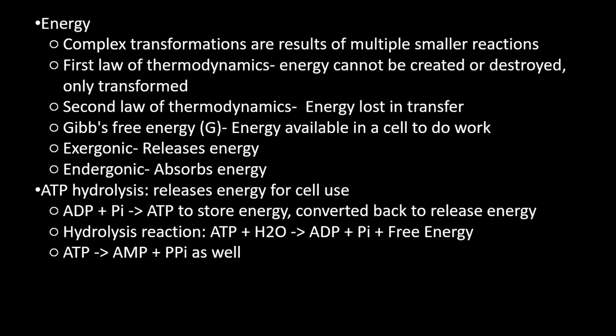Endergonic reactions absorb energy, like ADP and phosphate joining to make ATP. ATP hydrolysis is how the cell releases energy: adenosine triphosphate is converted back to ADP and phosphate, releasing energy via a hydrolysis reaction — ATP plus water forms ADP, phosphate, and free energy. In some cases ATP can also be converted into adenosine monophosphate and diphosphate.